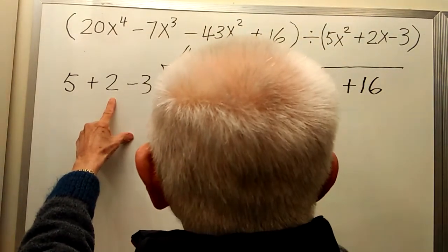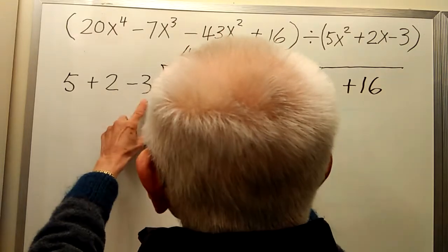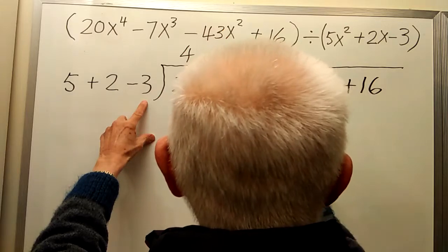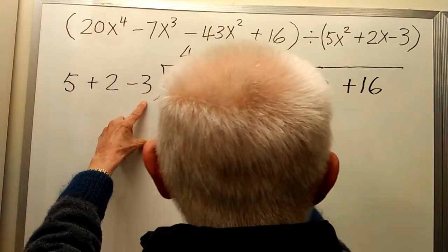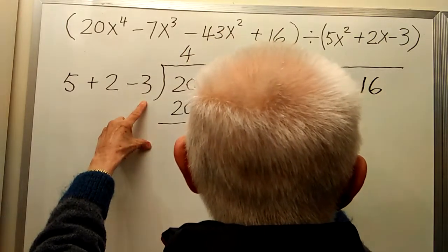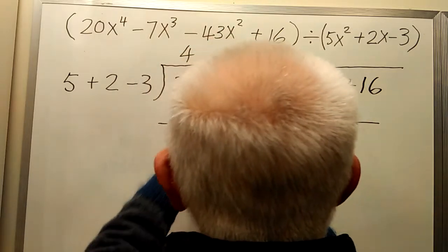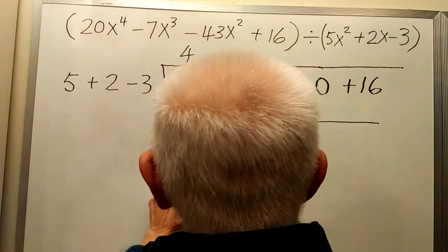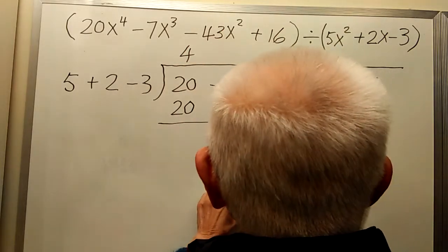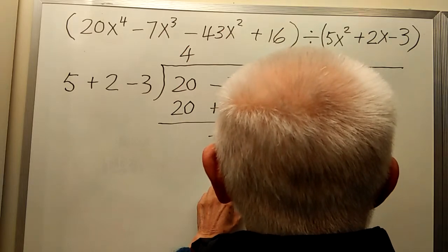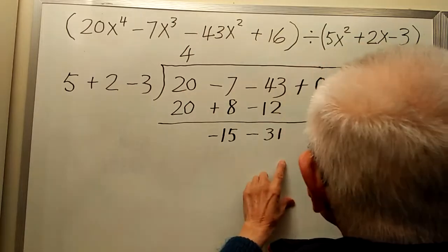2 times 4 is 8. Negative 3 times 4 is negative 12. We subtract. This is 0. Subtract. Subtract.